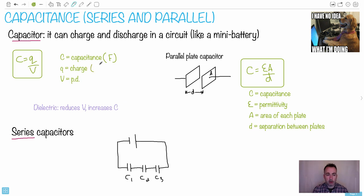We have charge, which is measured in coulombs, and potential difference, which is in volts. So this is your equation: Q over V.